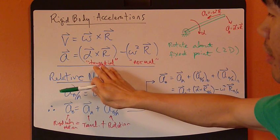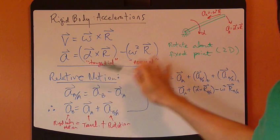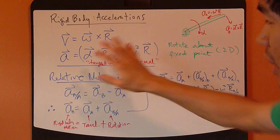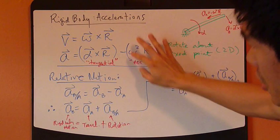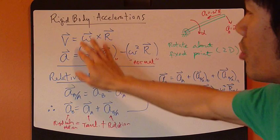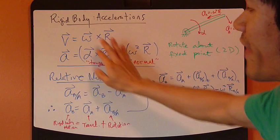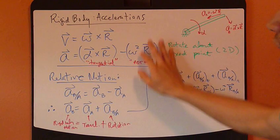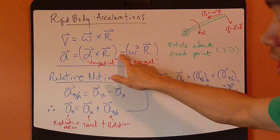Notice that I've used the tangent normal coordinate to describe this. You can also use the radial and transverse coordinate. So this will be the transverse theta component, and this will be the radial component, except that now this is a negative sign.